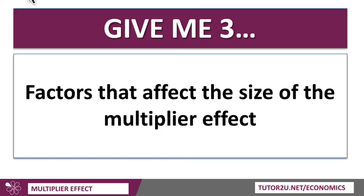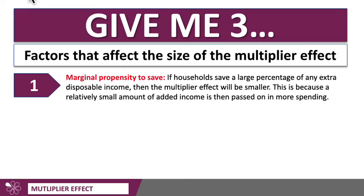So what are three of the factors that affect the size of the multiplier? Well, one is the marginal propensity to save. If households save quite a large percentage of any extra income, then the multiplier effect will tend to be smaller. That's because a relatively small amount of added income is then passed on in more spending. So one might receive £100 of extra income per week but choose only to spend £50 and save £50 — that's going to dissipate the size of the multiplier. If you received an extra £100 and spent £80, that would increase the size of the multiplier. So the first factor is the marginal propensity to save.